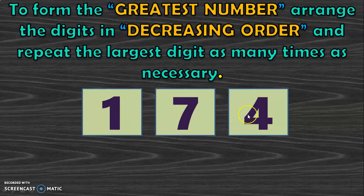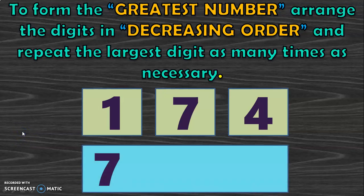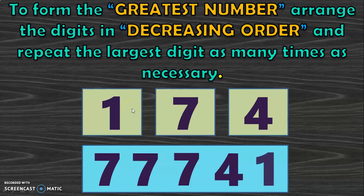Here we are given 3 digits, but we need to make the greatest 5-digit number, so we need 2 more digits. Those 2 extra digits are obtained by repeating the largest digit as many times as necessary. The largest digit is 7, so we repeat 7 two more times, then arrange the remaining digits in decreasing order: 4 and 1. So the greatest 5-digit number using digits 1, 7, and 4 is 77,741.